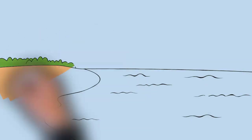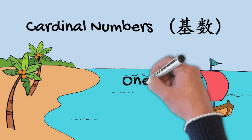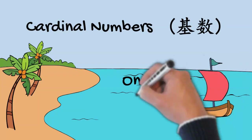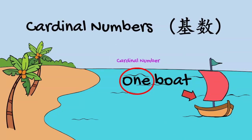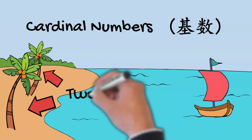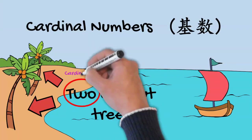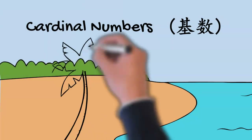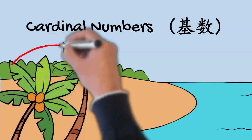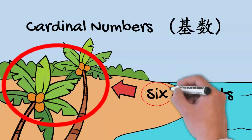Let's look at some examples. In this picture, we have one boat. On the beach, we have two coconut trees. And then, on the coconut trees, we have six coconuts.